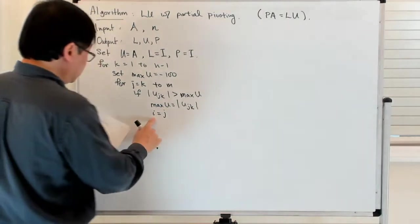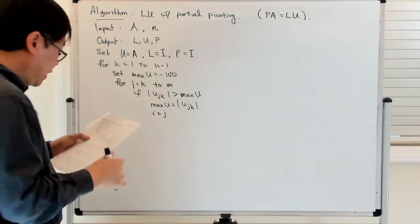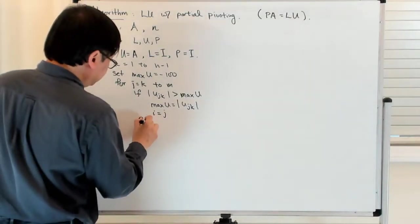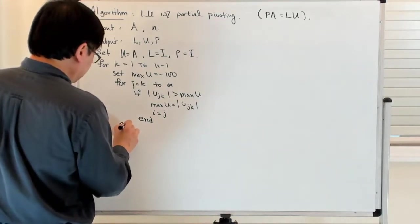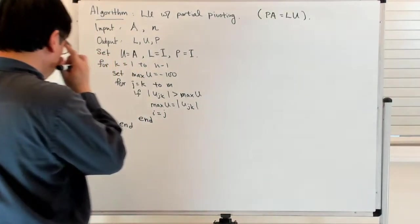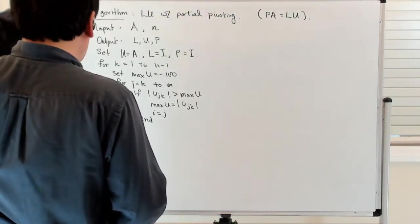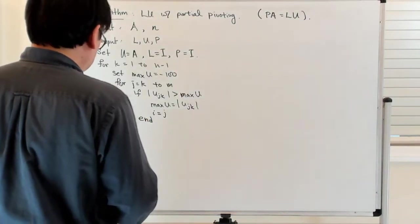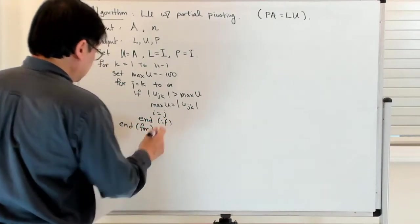I'm going to store I as the entry, where the row with the maximum pivot is. So you get the if statement, and then you end the for statement.